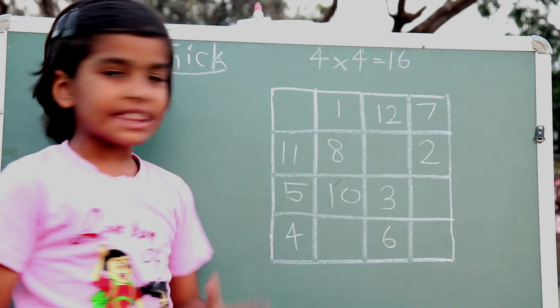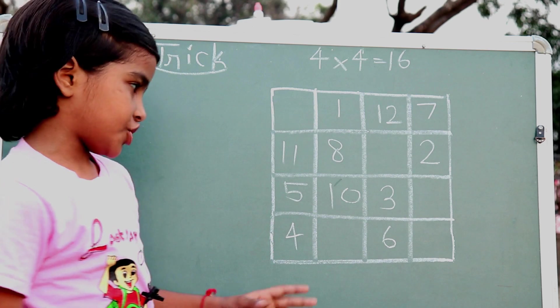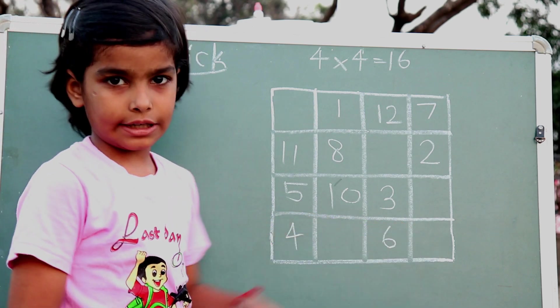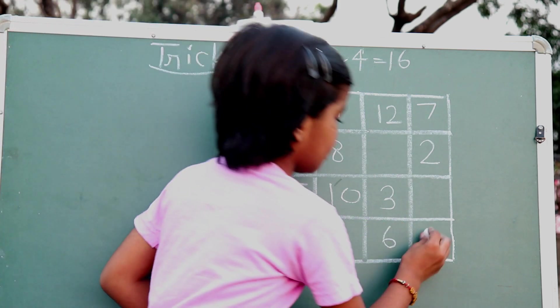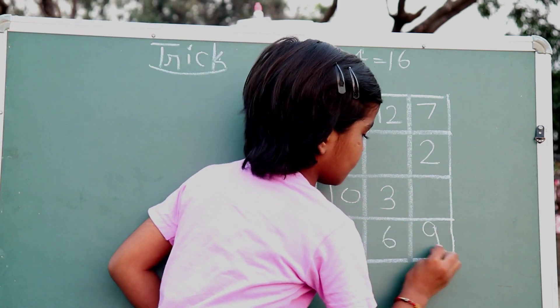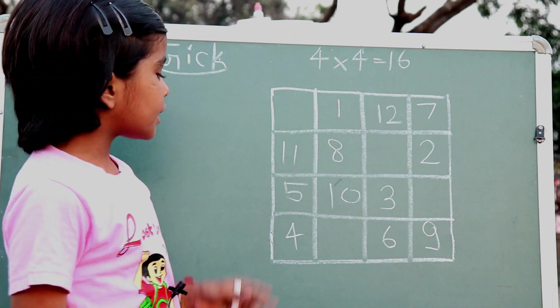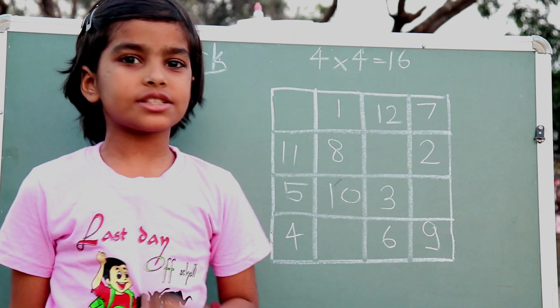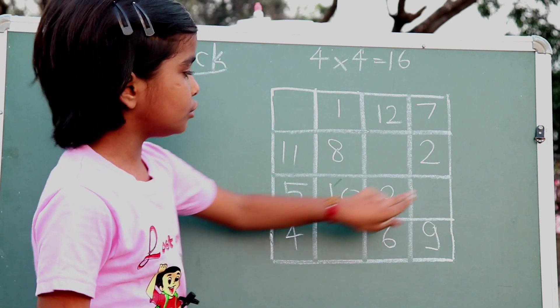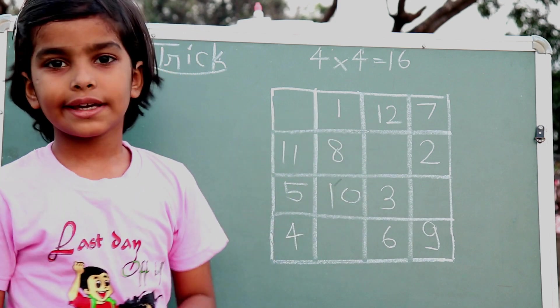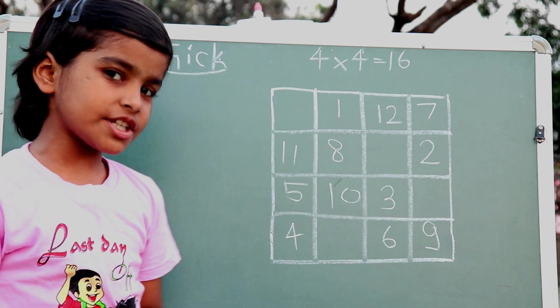So how many boxes will you add extra? And here we will add 9. How many boxes will you add extra? 1, 2, 3, 4. How many boxes will you add extra? 4.